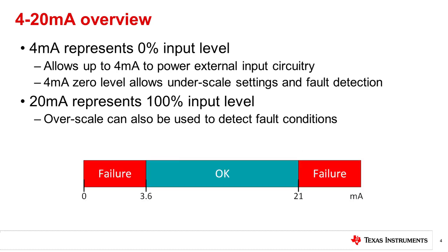A 4 milliamp zero level and 20 milliamp full scale level allow for fault detection in the system. Zero amps on the transmitter output would indicate that there is a break in the transmission line. Smart measurement devices can also detect internal faults such as sensor failure. The NAMUR NE43 signal standard allows for the user to set an underscale or overscale failure mode that will output a 3.6 milliamp or 21 milliamp signal for at least 4 seconds to report a failure to the control station. 3.6 milliamps, 21 milliamps, and 4 seconds are used to avoid false alarms. The 4 milliamp zero level also allows the transmitter to supply up to 4 milliamps of current to power external input circuitry. We will introduce that capability in a future video.